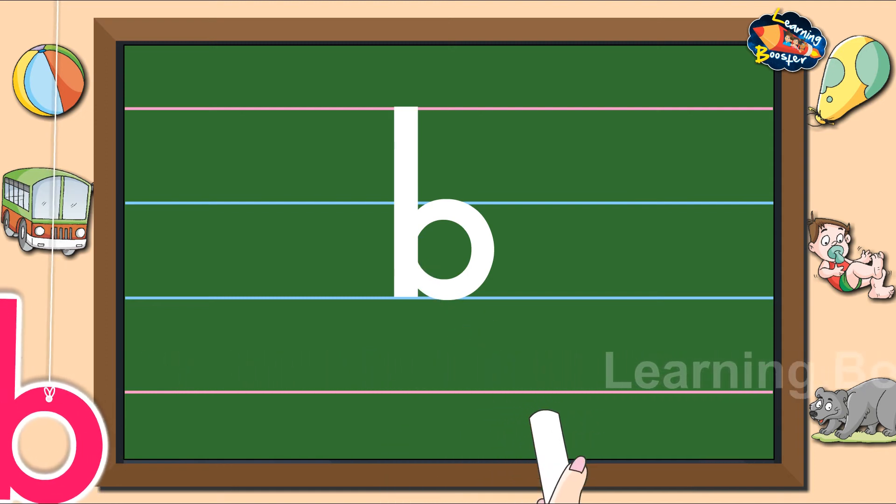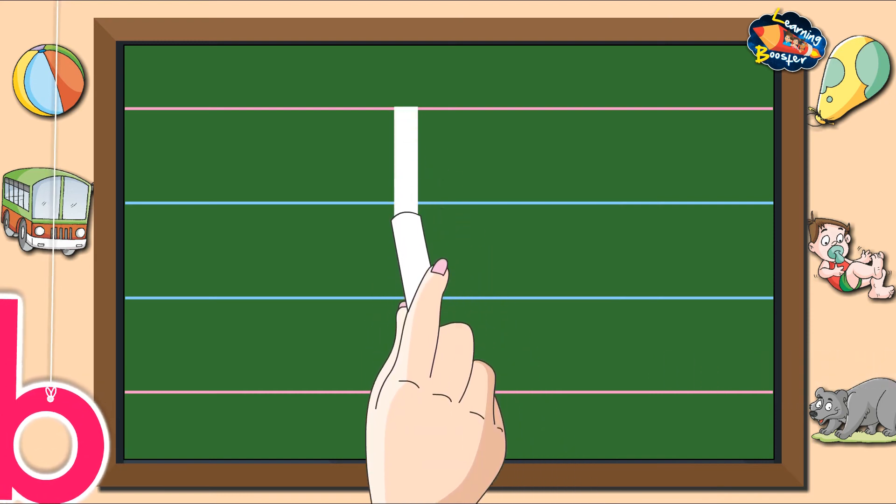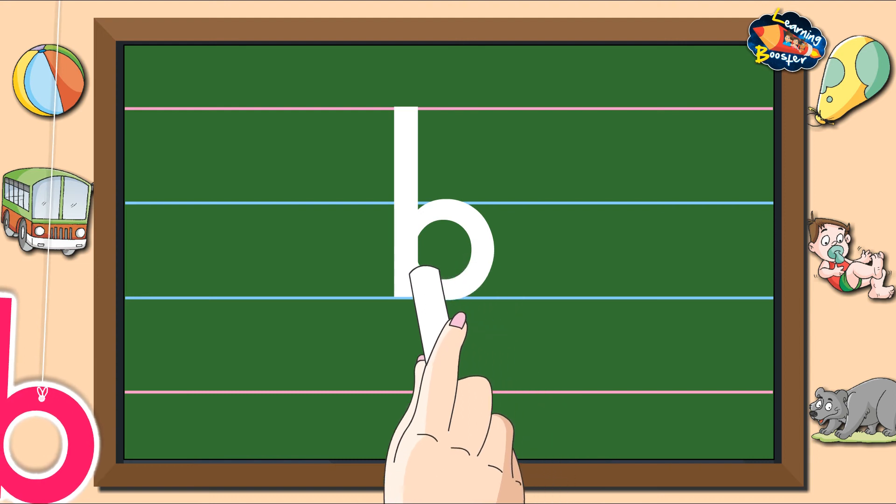Let us look at it once more. One standing line and a curve makes letter B.